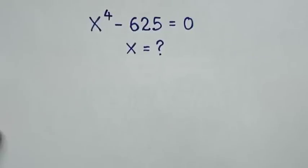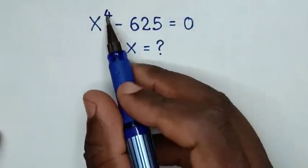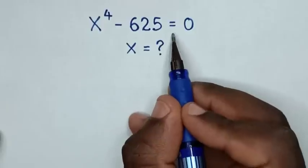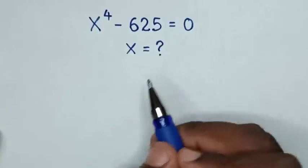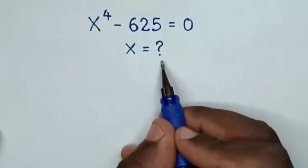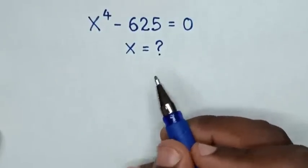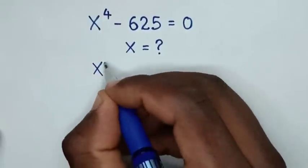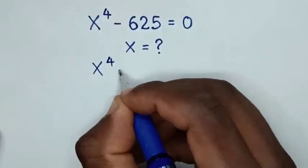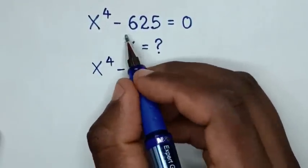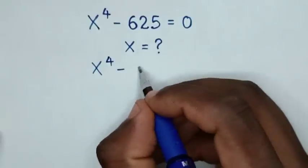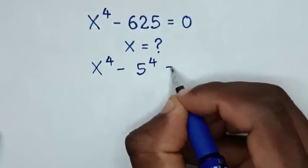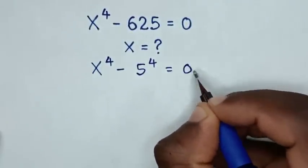Hello. How to solve x power 4 minus 625 is equal to 0 to find the values of x. From here, x power 4 minus 625 is the same as 5 power 4, equal to 0.